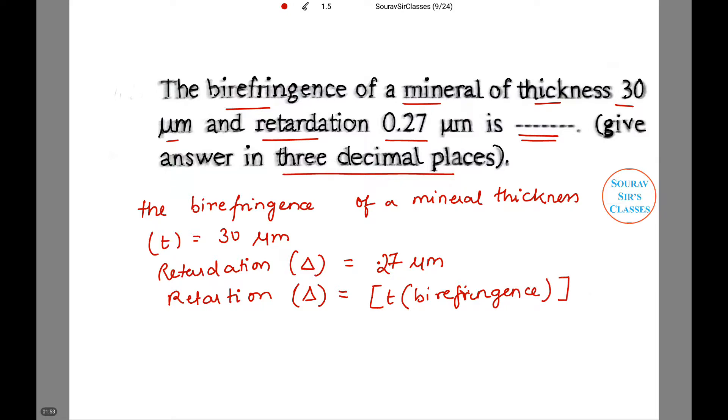So substituting the values we have 0.27 equals 30 times birefringence. So this is equal to 0.009, and this is correct. The answer is in three decimal places so we do not need to do anything else.